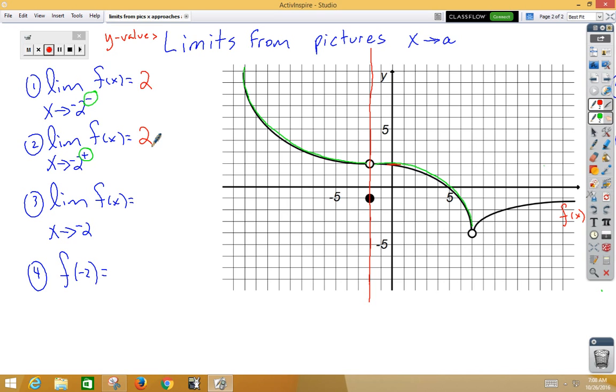The third problem, notice that there is nothing here to indicate from the left or from the right. That makes it a two-sided limit. To do a two-sided limit, we compare the left side limit with the right side limit. If they're the same, the two-sided limit is that same value. If they were different, it would be does not exist.